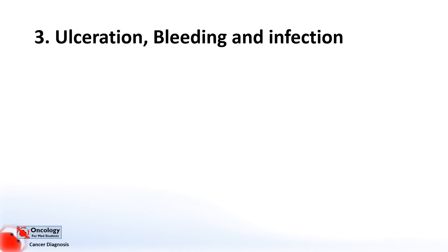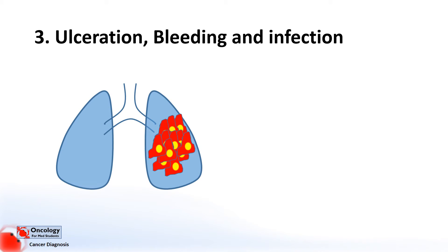The next example is ulceration, bleeding, and infection. As tumours grow they invade tissues local to them, and this might mean invading blood vessels and causing bleeding, or causing openings that allow bacteria to travel to parts of the body where they wouldn't normally be able to get to and cause infection. Some examples of this might include something called hemoptysis, which is coughing up blood as a result of lung tumours.